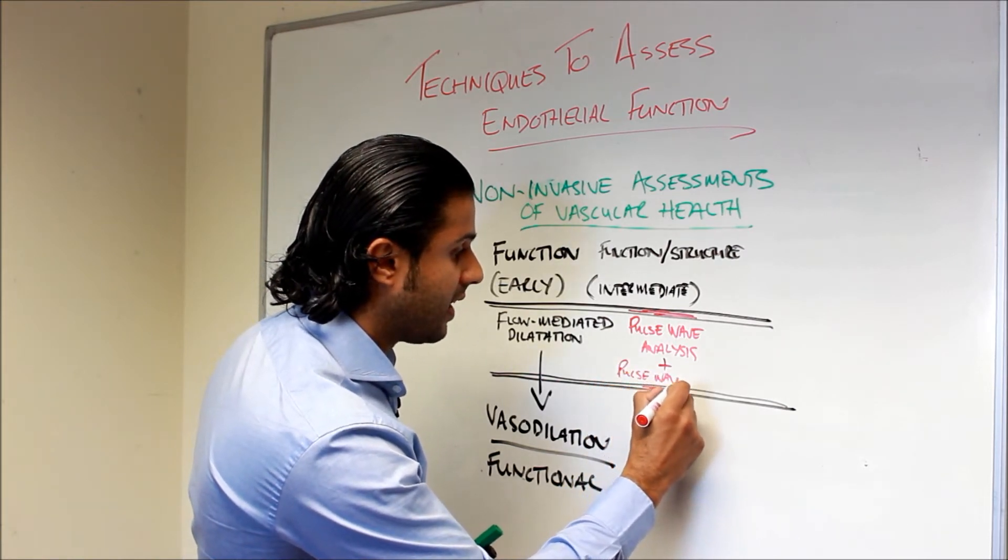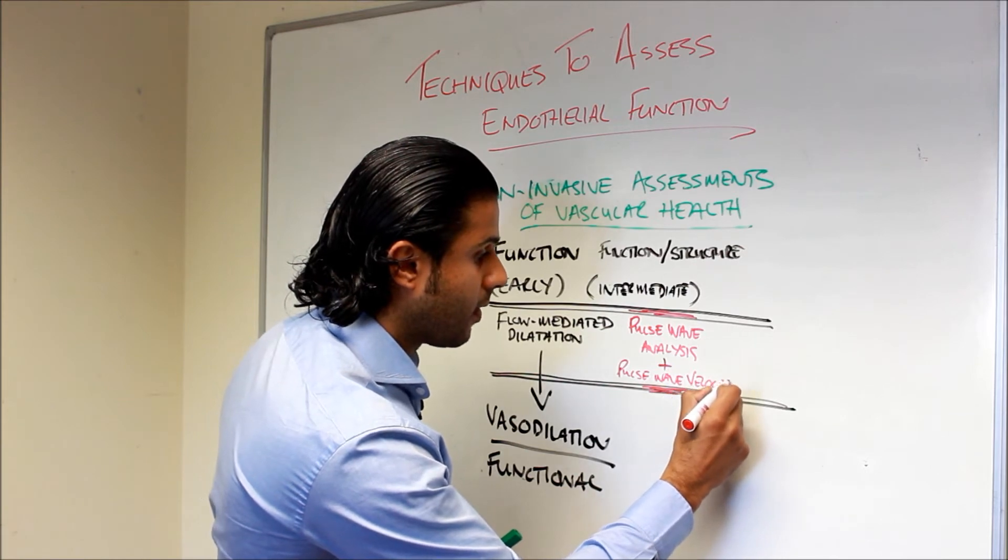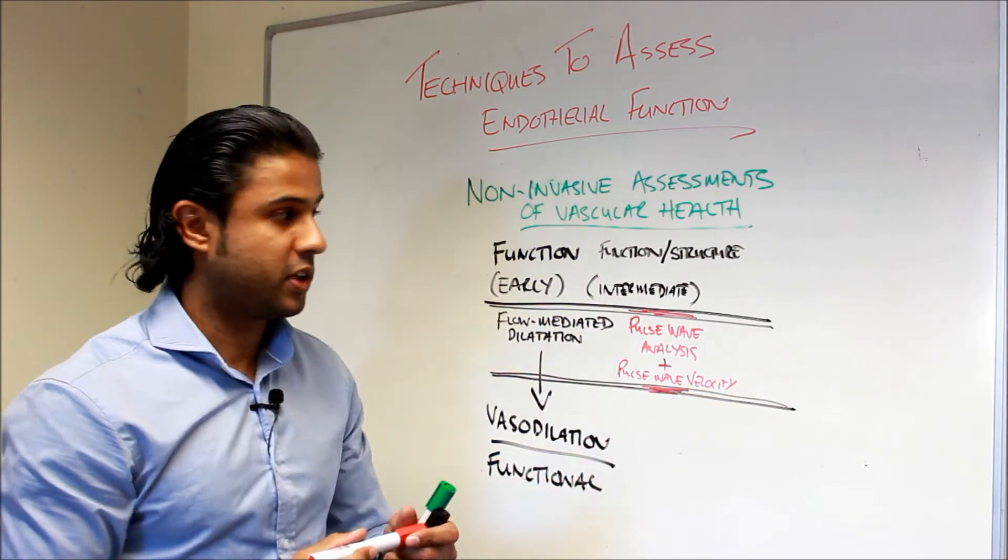So a couple of techniques there: pulse wave analysis and pulse wave velocity. This is looking at the intermediate measures of atherosclerosis or dysfunction.